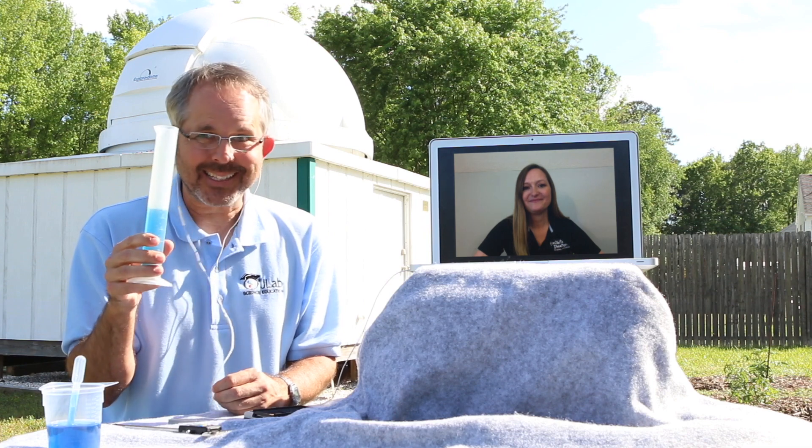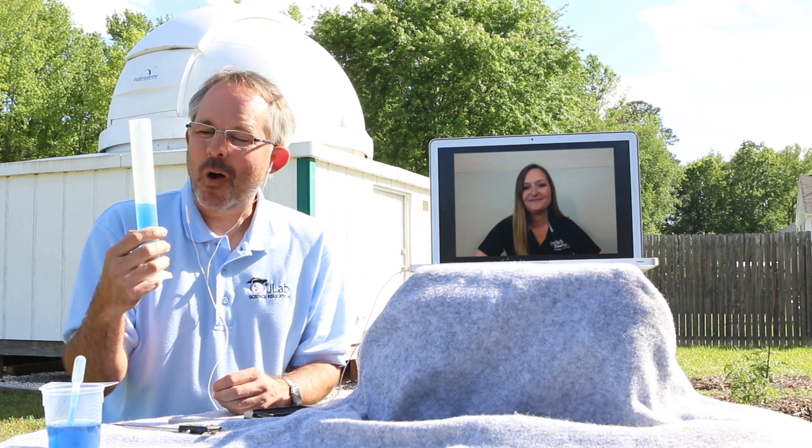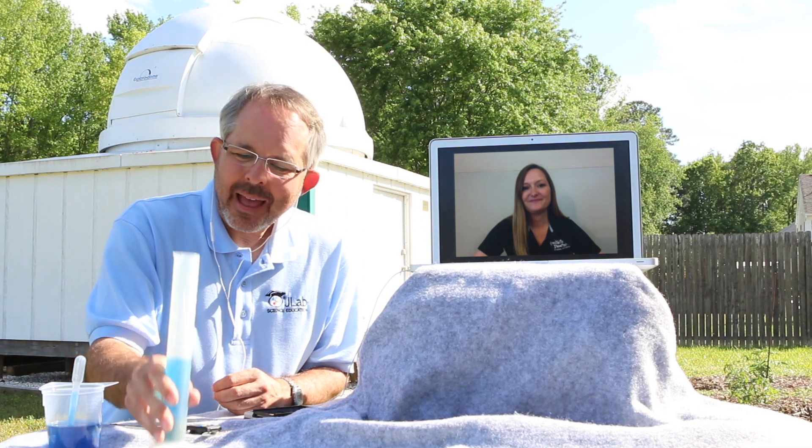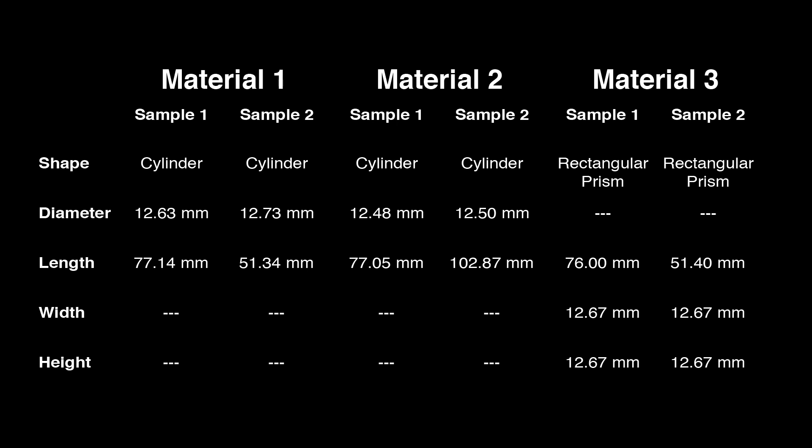One more thing before we go. You may have noticed that while the scale is fairly precise, the graduated cylinder isn't — and sometimes the water doesn't even look level. Happily, the materials have simple shapes, so we can use a more accurate and precise measuring instrument and a little geometry to calculate the volume. Here's all the relevant information if you want to have a try at that.